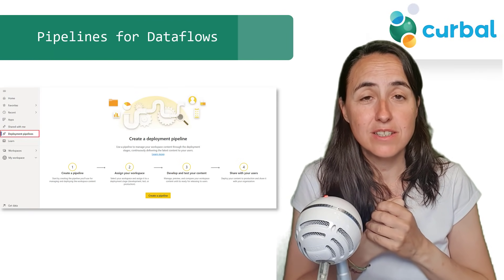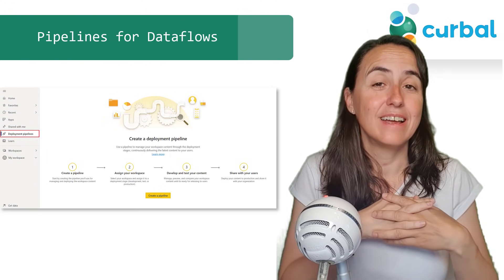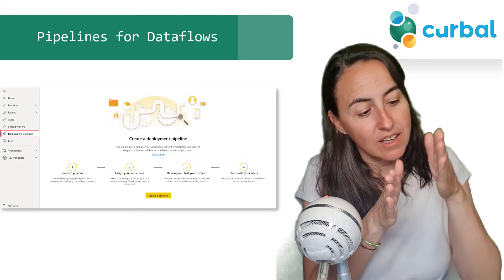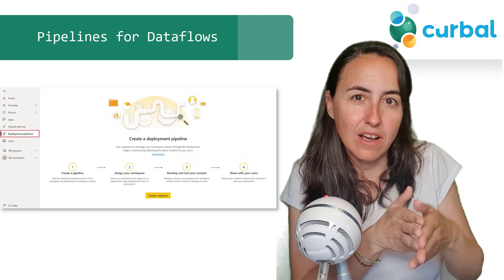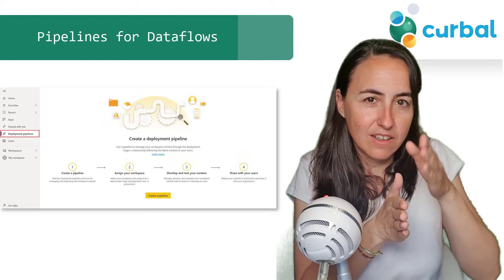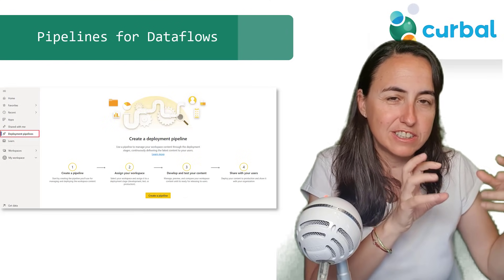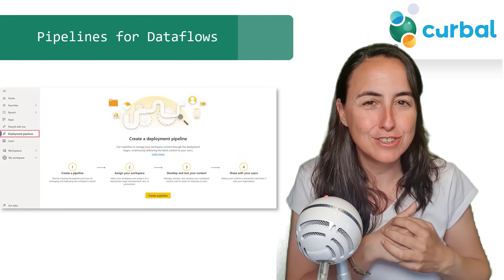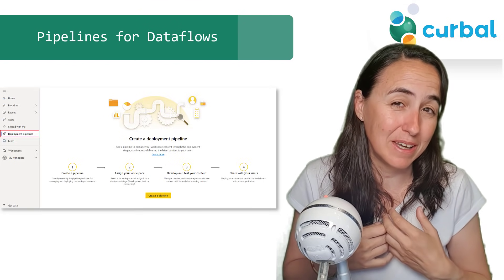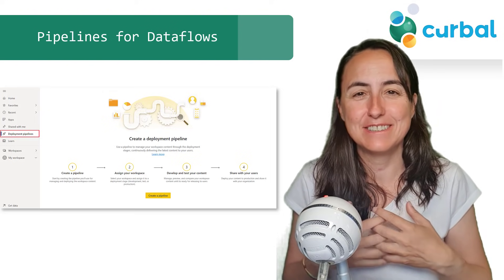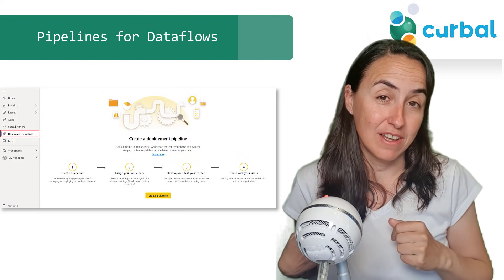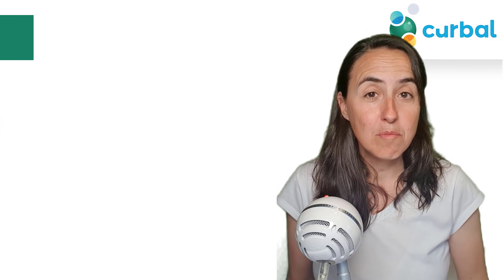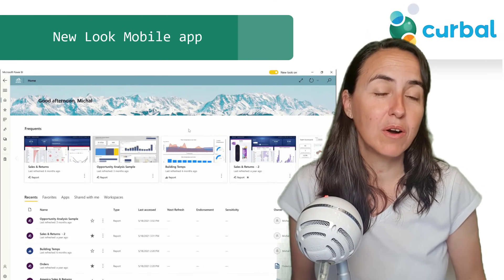Big news for those that use datasets: you can now manage and deploy dataflows with deployment pipelines. It's basically a staged environment where you can test, put it in staging, and then send it to everybody — so you don't just publish your changes right away, which might not be a good thing. There is an API for managing deployment pipelines as well.